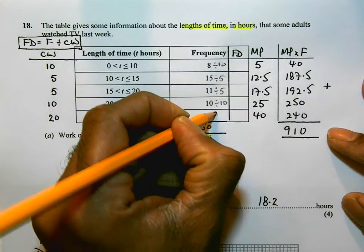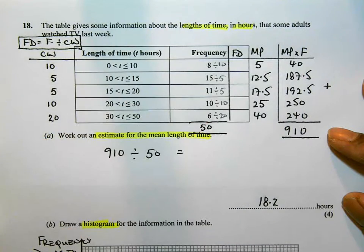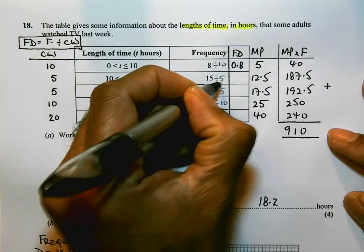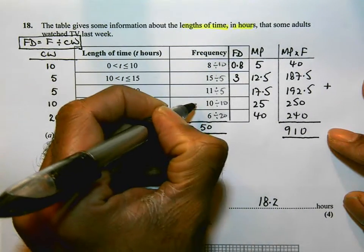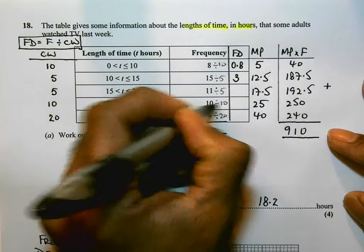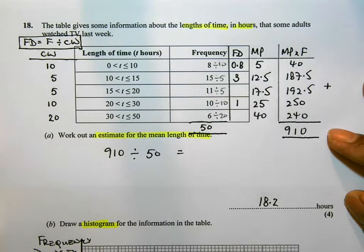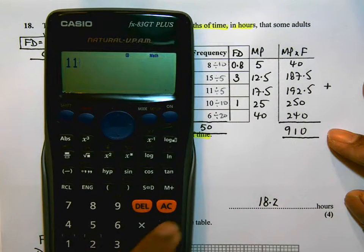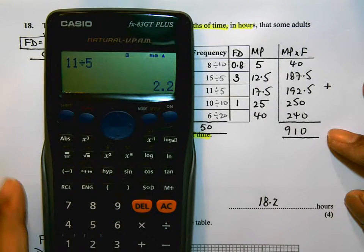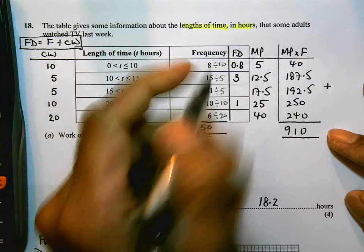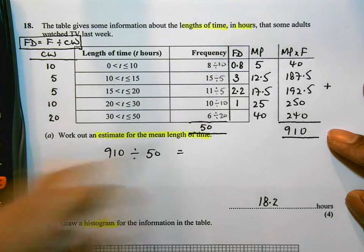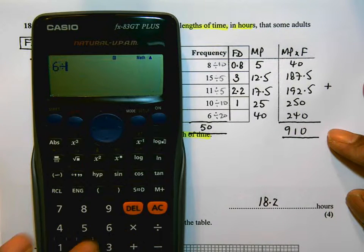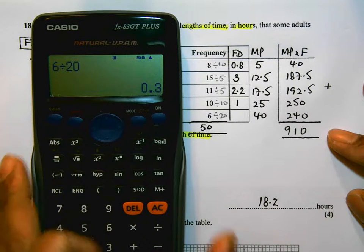Some of these are straightforward. 8 divided by 10 is 0.8, 15 divided by 5 is 3. I'll come back to 11 divided by 5. 10 divided by 10 is 1, and 6 divided by 20, again I'll come back to that and use my calculator for that one. So let's do 11 divided by 5, that's 2.2. 6 divided by 20, 0.3. So those are my frequency densities.